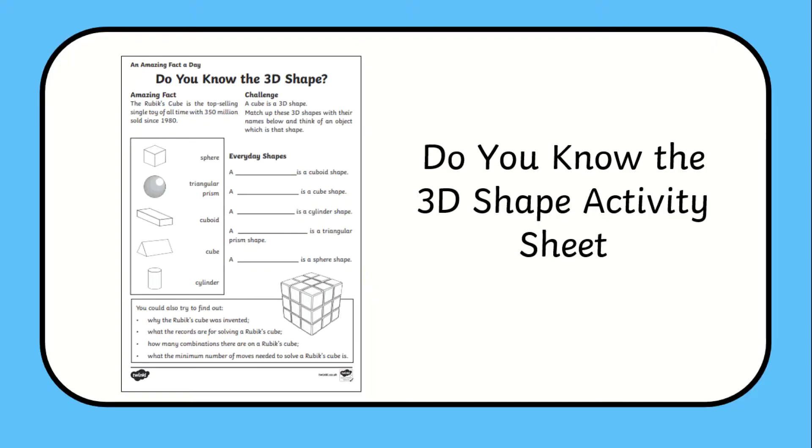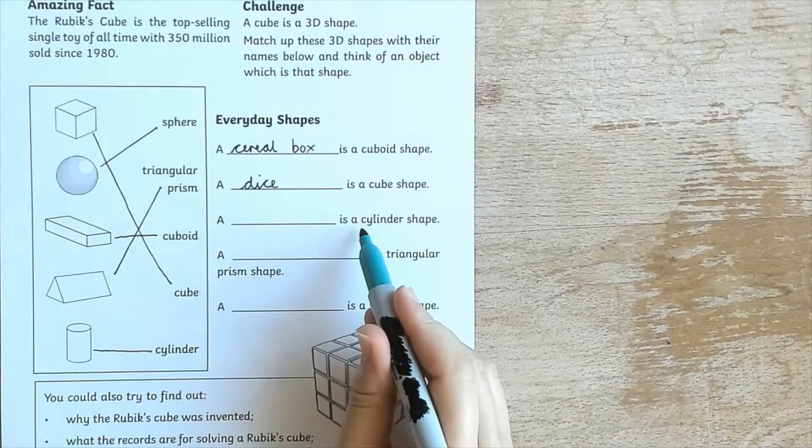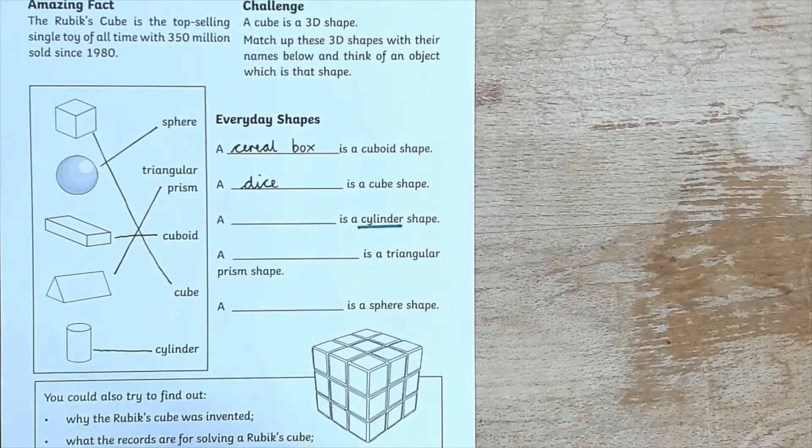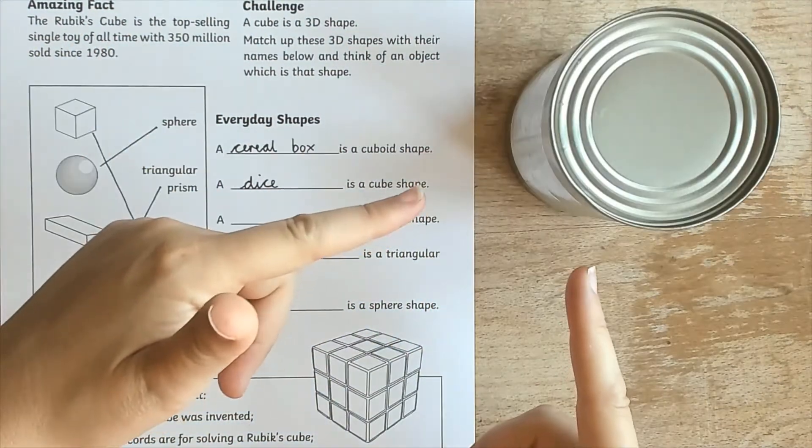Next we have this 'do you know the 3D shape' activity sheet. This activity challenges learners to think of real life objects which are the 3D shapes they have been studying.